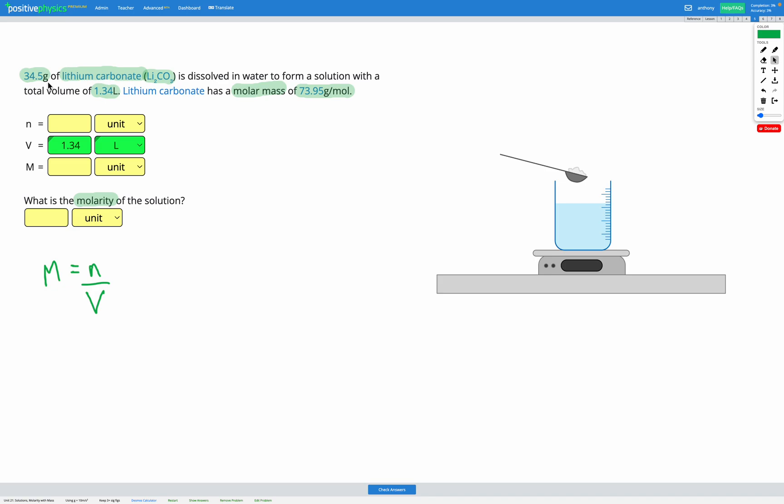Now we are given the mass of lithium carbonate and the molar mass of lithium carbonate, so we can do a conversion to find the number of moles. So we have 34.5 grams of Li2CO3. We can draw ourselves a little dimensional analysis table. We want to convert from grams into moles, so I'm going to divide by grams of Li2CO3 and go into moles of Li2CO3.